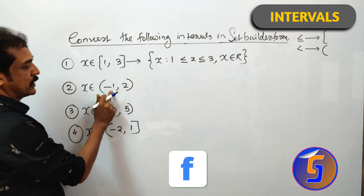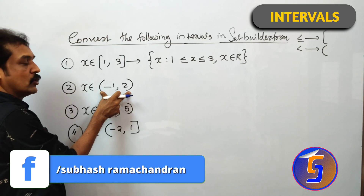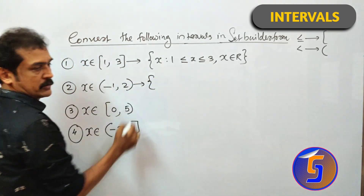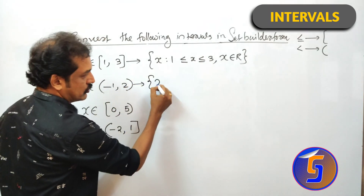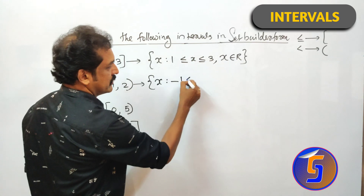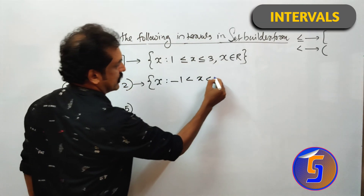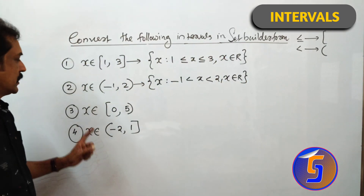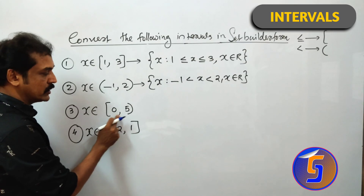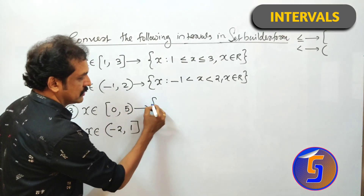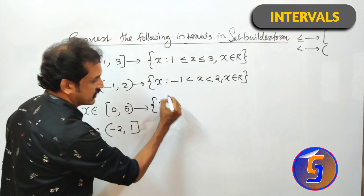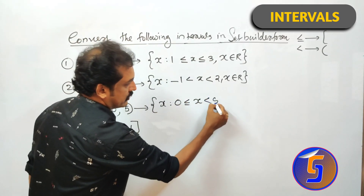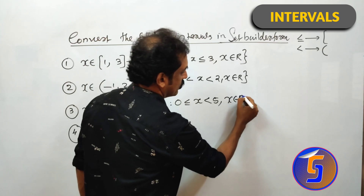x element of open interval (-1, 2) can be written in set-builder form as: set of all x such that -1 < x < 2, x element of R. Third: x element of semi-closed [0, 5) can be written as: set of all x such that 0 ≤ x < 5, x element of R. If it starts with a square bracket, use less than or equal to; if it ends with a simple bracket, use less than.